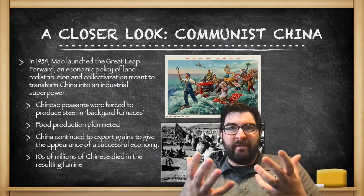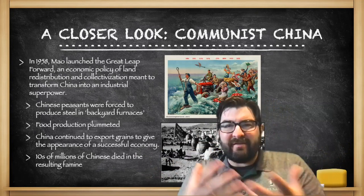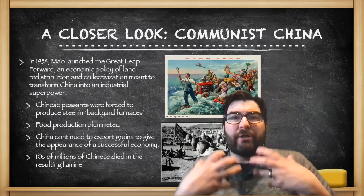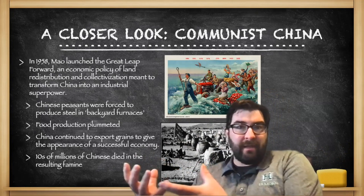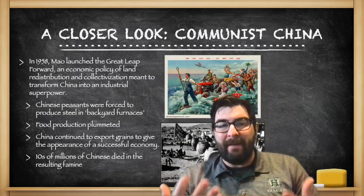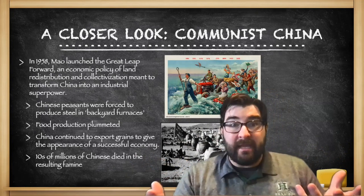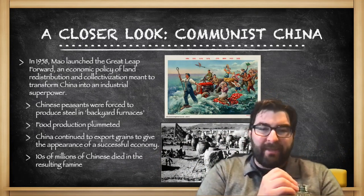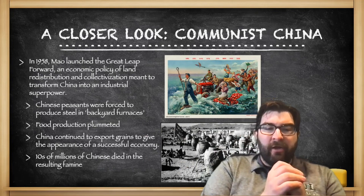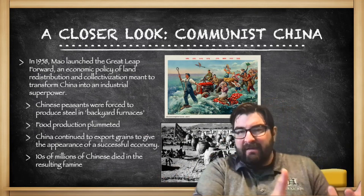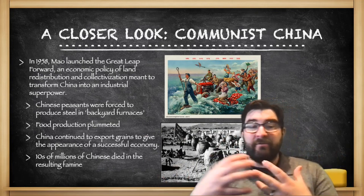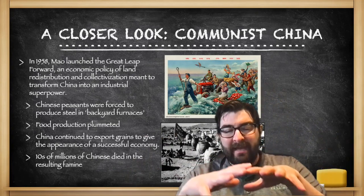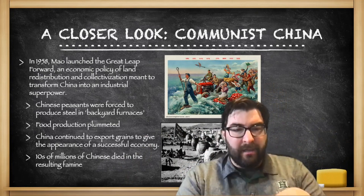Mao Zedong saw the greatest evidence of a state being industrially powerful as how much steel it could produce. He was going to utilize his greatest asset — his population — to start making steel. Hundreds of thousands of backyard furnaces sprouted up in China, where peasants would take time from their work in the fields to actually produce steel. Food production in the late 1950s and early 60s would plummet.